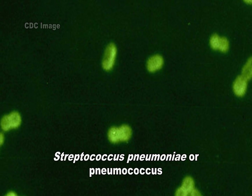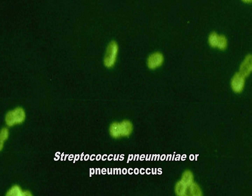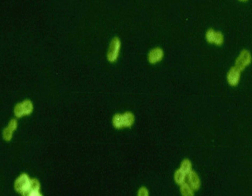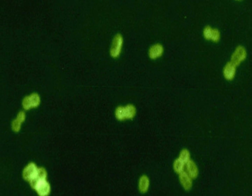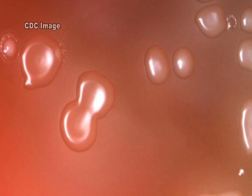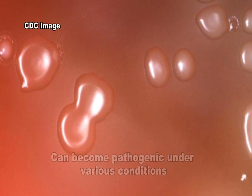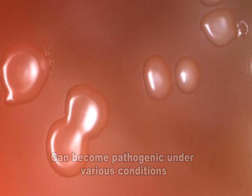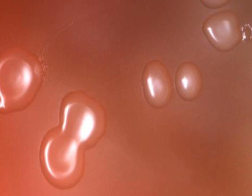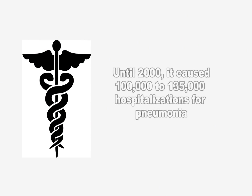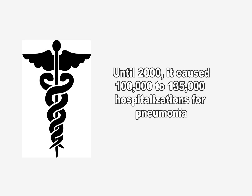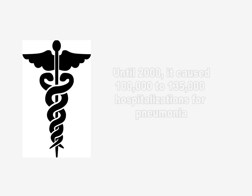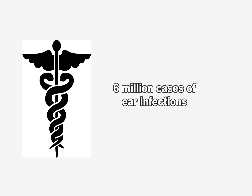Streptococcus pneumoniae, or pneumococcus, is a type of gram-positive bacteria. It can often be found in the upper respiratory tract of humans, but as with many natural flora, it can become pathogenic under the right conditions and cause pneumonia, paranasal sinusitis, and meningitis.